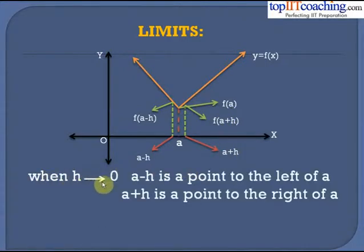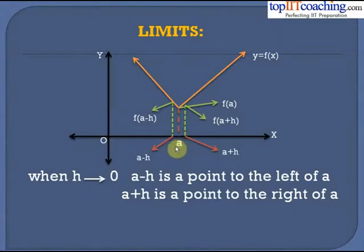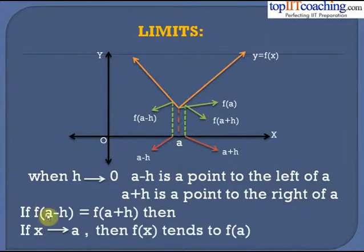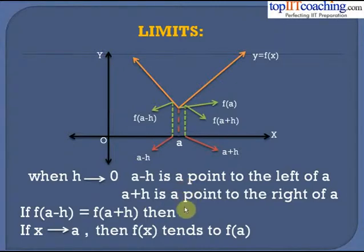Now when h tends to 0, a minus h is a point to the left of a. If h is very close to 0, then a minus h is very close to a — it is almost touching the point a. Similarly, a plus h is a point to the right side of a, just to the right of x = a. If f(a − h) equals f(a + h), that is these two values are equal, then as x tends to a, f(x) would tend to f(a). We then say that the limit exists.